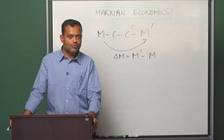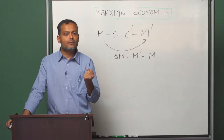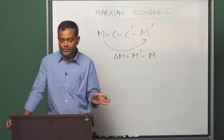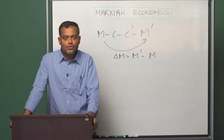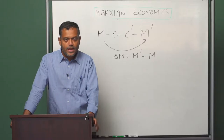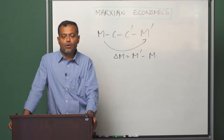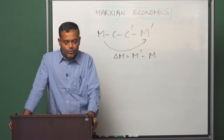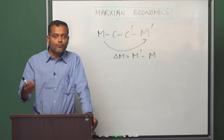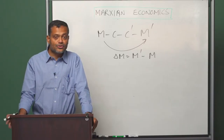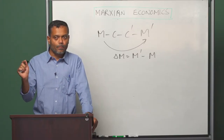There are two sub-cases to consider. If the investment takes place with the key parameters of the production process remaining unchanged — and by parameters here I mean two parameters: the rate of surplus value and the organic composition of capital — then what we have is what Marx calls the expanded reproduction of capital. On the other hand, if we have the more general case where along with reinvestment of surplus value there is also a change in the key parameters, then we have accumulation of capital.